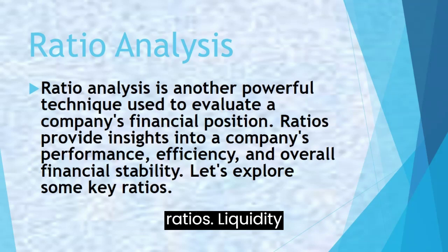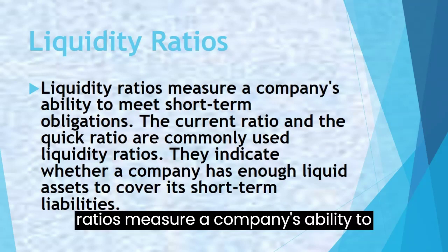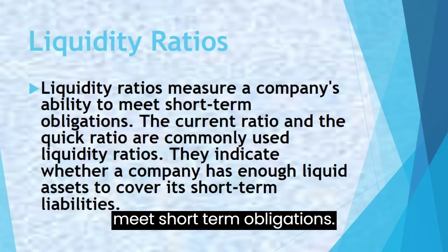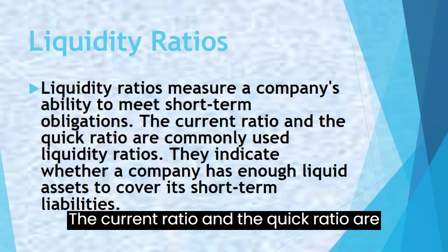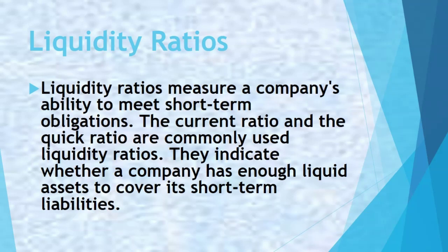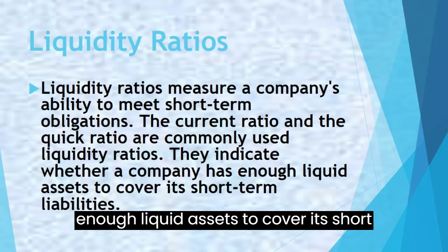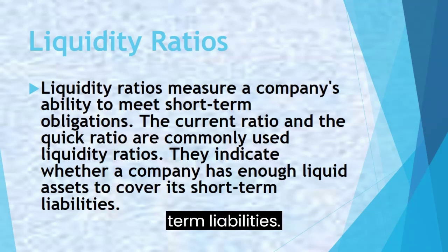Liquidity ratios measure a company's ability to meet short-term obligations. The current ratio and the quick ratio are commonly used liquidity ratios. They indicate whether a company has enough liquid assets to cover its short-term liabilities.